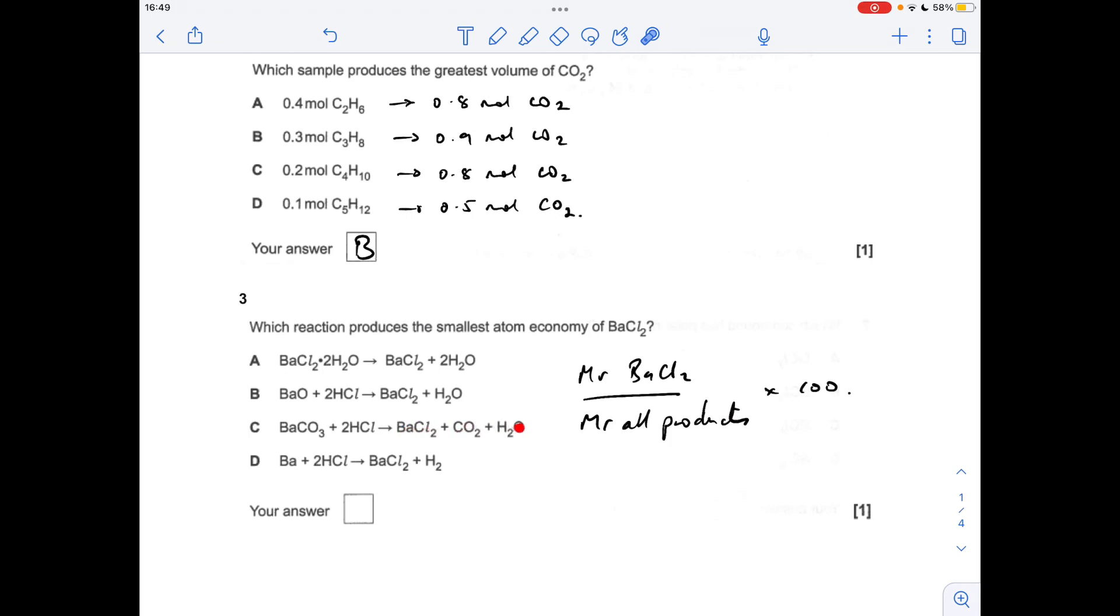Option C is going to give you the biggest in terms of MR of all the products because you've got carbon dioxide in there which is quite heavy, and so that's going to give you the smallest atom economy, so it was option C.